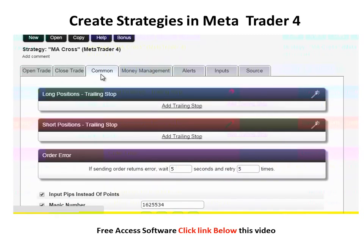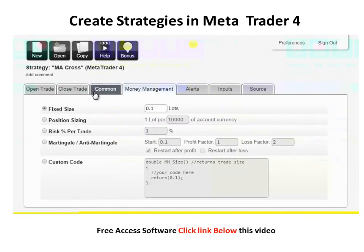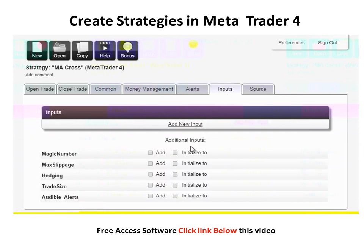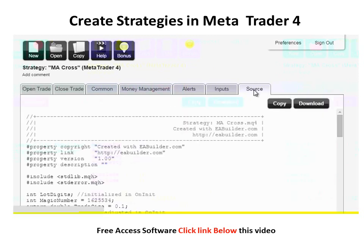In the Common tab, there are some additional options we will look at later. In Money Management, we will use a fixed size of one mini lot or 0.1 standard lots. We can check audible alerts for each order and error sending order. In Inputs, we will add the trade size. The Expert Advisor is ready and the source is generated. Copy the source.